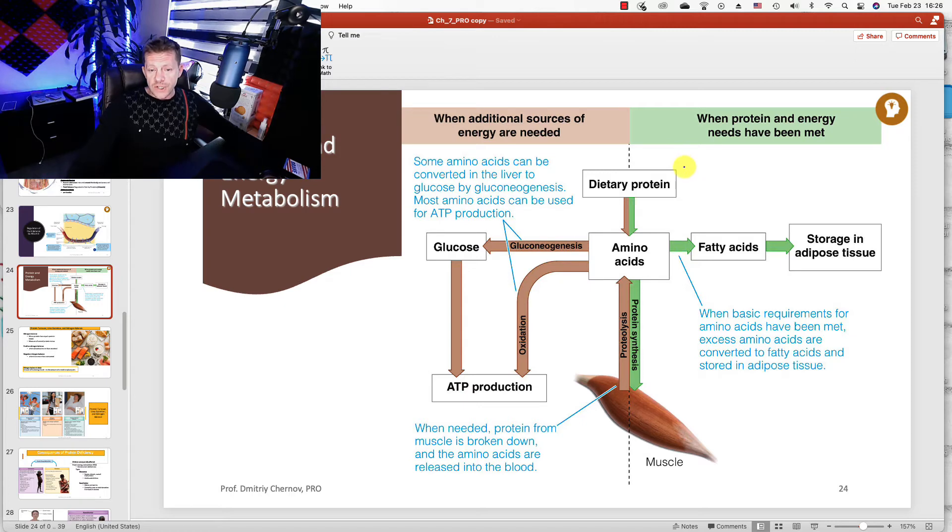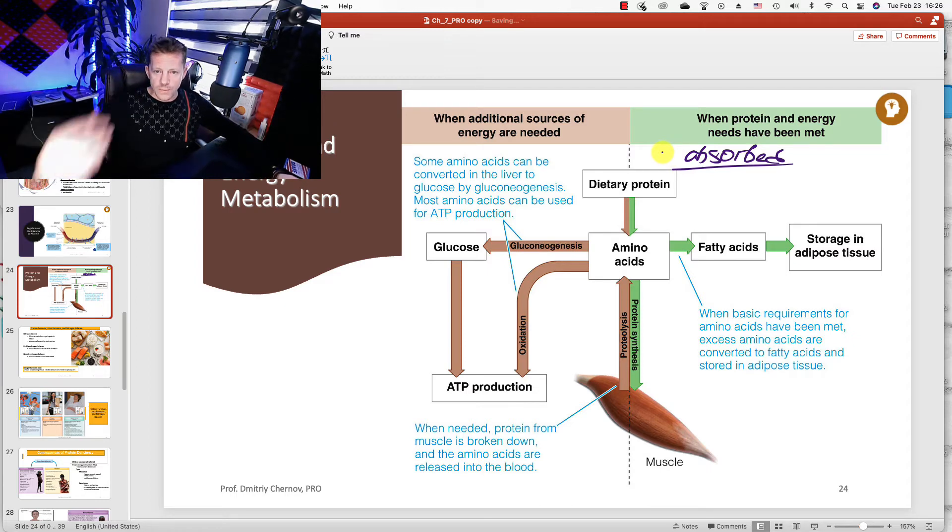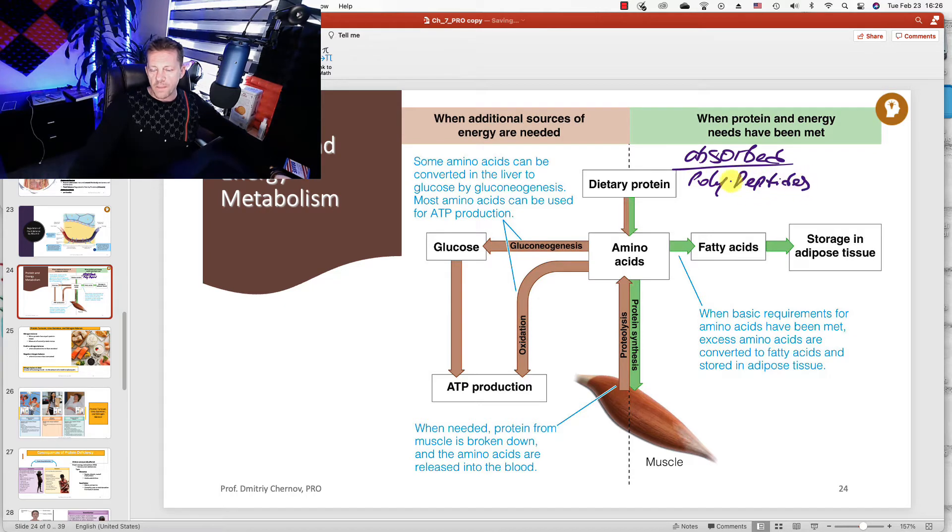So through digestion, the dietary protein - those polypeptides - they were digested and now your body absorbed them as amino acids. So there are a few ways that the amino acids can go. Let's look at that.